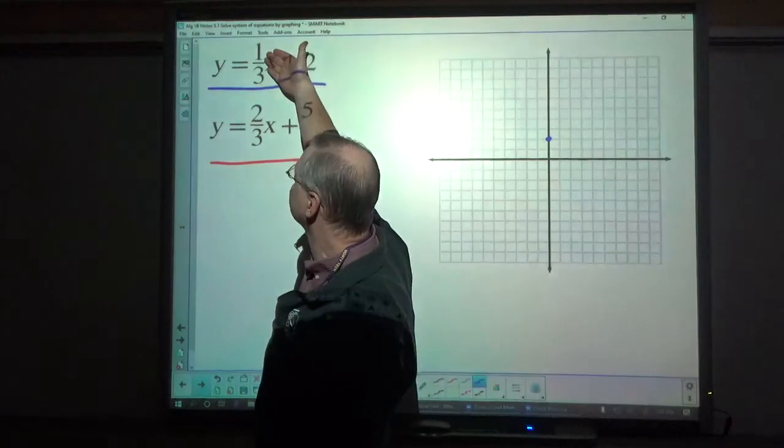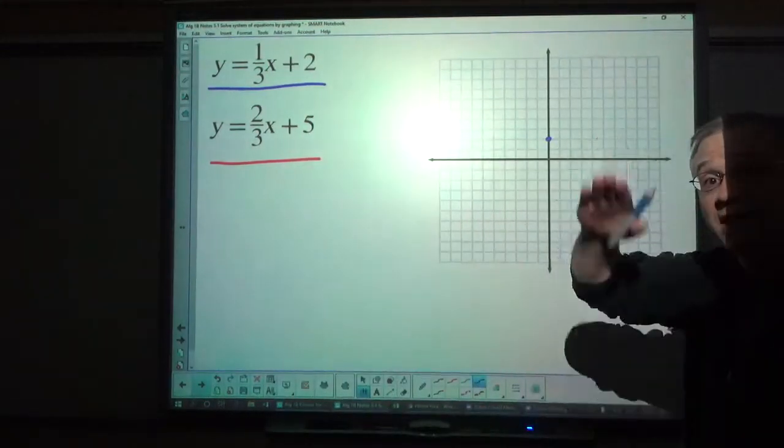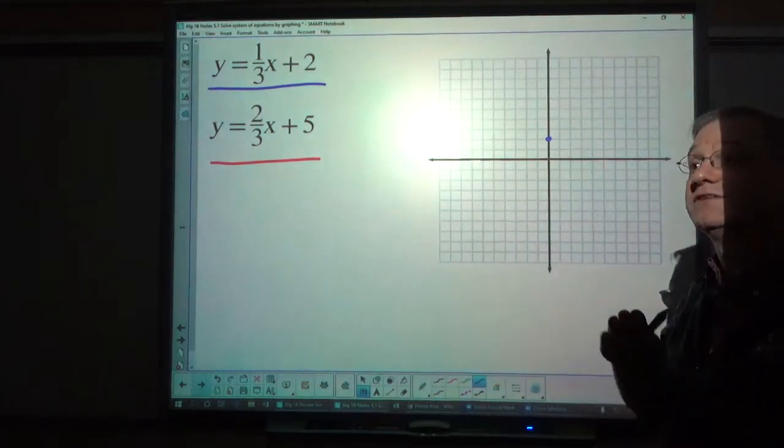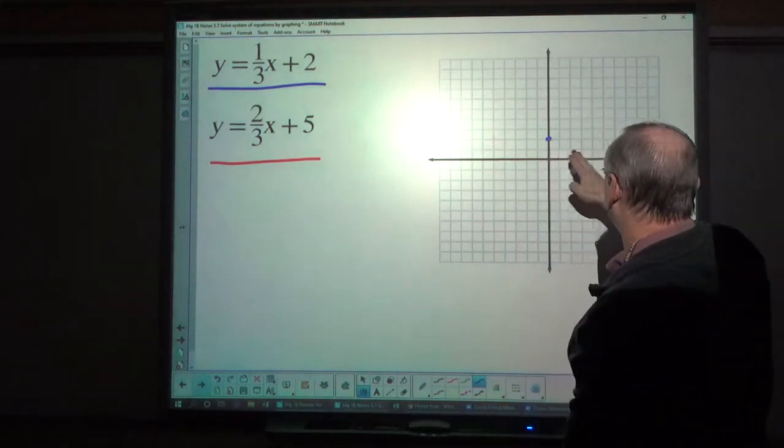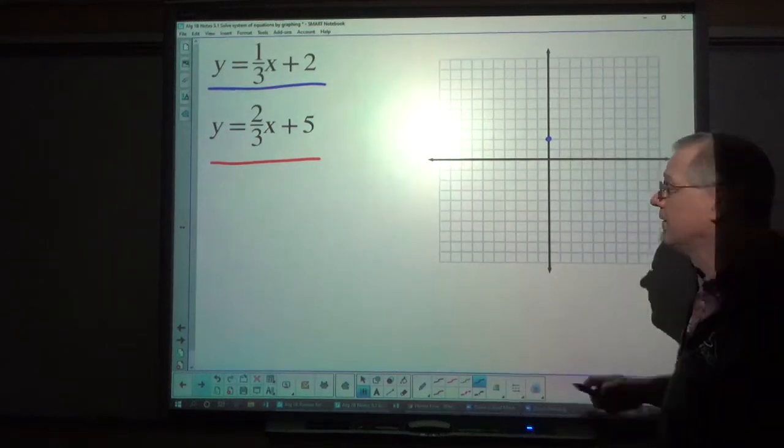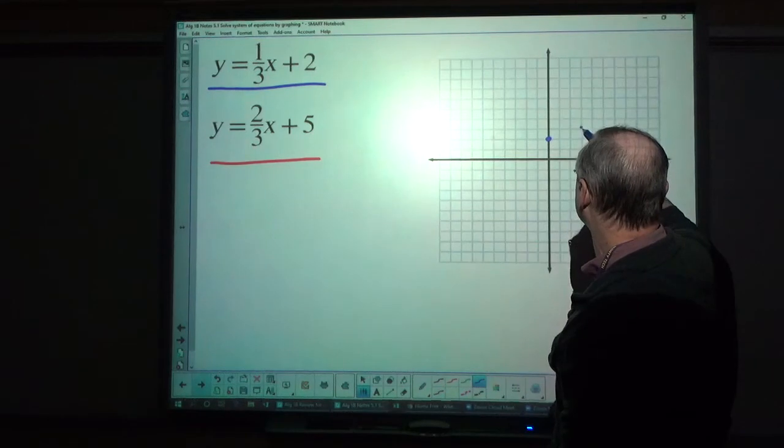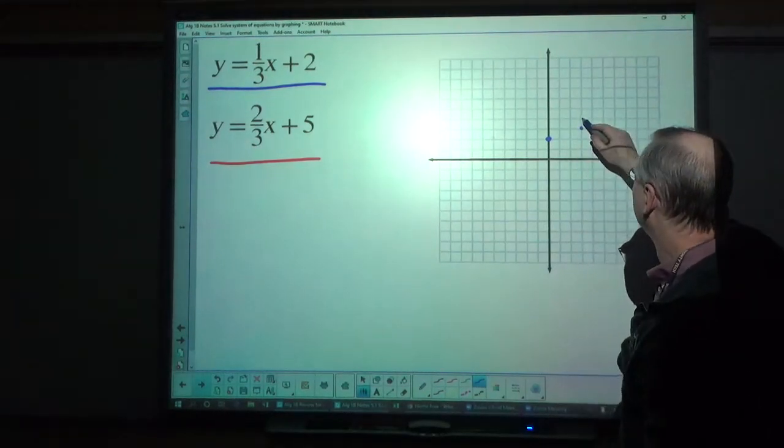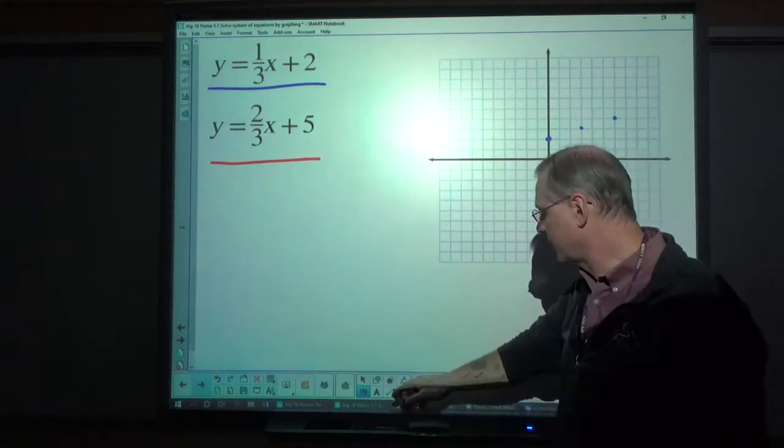From that dot, I'm going to count out the slope of 1 over 3. The top number is the up-down movement, the bottom number is the left-right movement. Remember, positive movement up, positive movement to the right. So in this case, up 1, to the right 1, 2, 3. Again, repeat that: up 1, right 1, 2, 3. That's enough, I can draw my line.